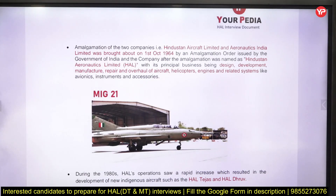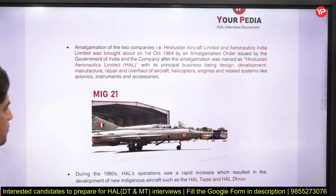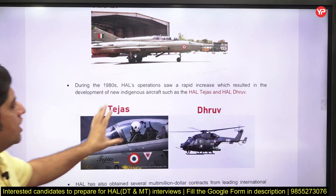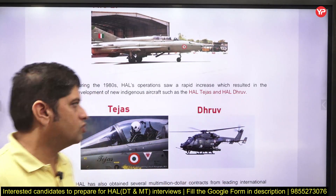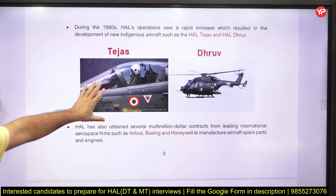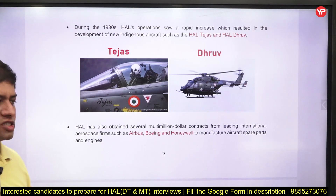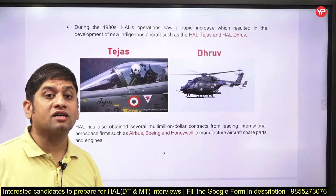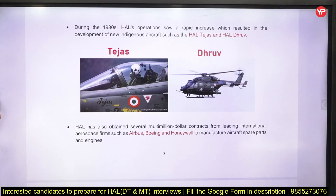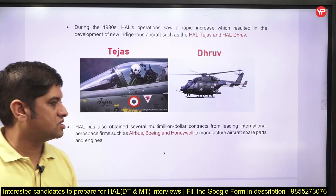You should know the various verticals of HAL. Tejas and Dhruv are the two main products — in interviews they will ask: are you aware of Tejas, are you aware of Dhruv? Dhruv is a helicopter and Tejas is a Light Combat Aircraft. HAL is also a supplier — sometime they will ask who our customers are. Airbus, Boeing, and Honeywell are customers for whom HAL makes some products. Airbus is European-based and Boeing and Honeywell are American-based.